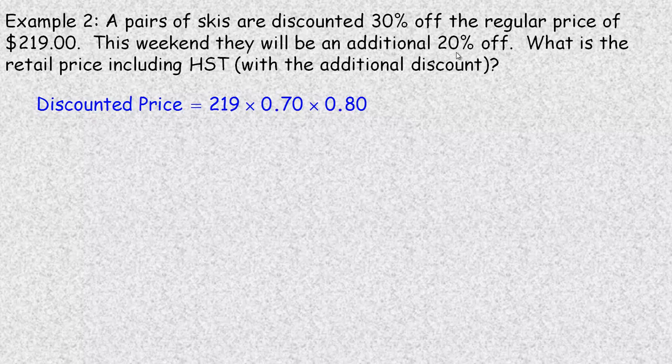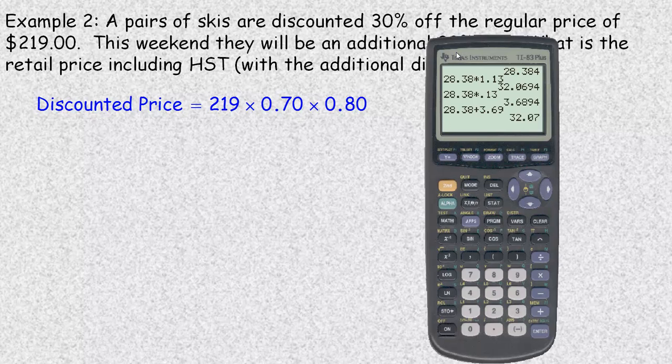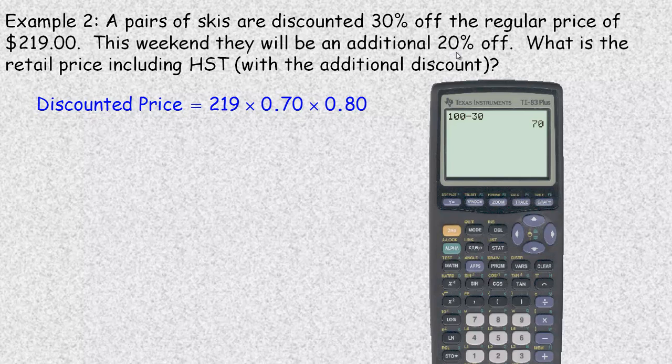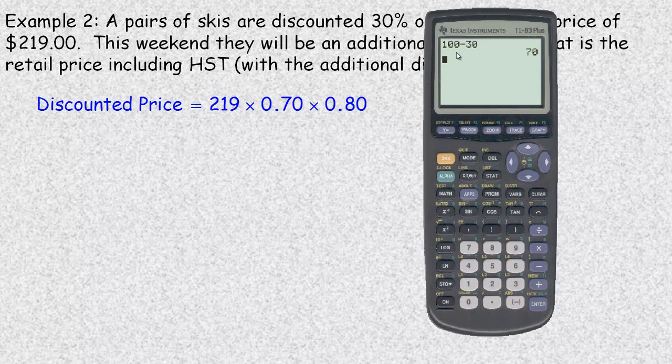So the discounted price: we start out with $219. 30% off means you're paying 70%. If you take your calculator, 100 minus 30% means you're still paying 70%. So taking 30% off is the same as paying 70% of the original price. Similar idea with 20% off—if you're taking 20% off then you're still paying 80% of that price.